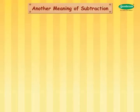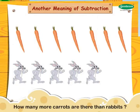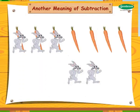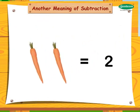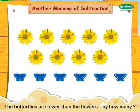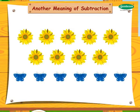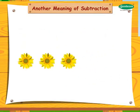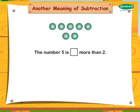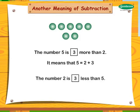Another meaning of subtraction: how many more carrots are there than rabbits? Are the butterflies fewer than the flowers? By how many? Three. The number five is three more than two — it means that five equals two plus three. The number two is three less than five — it means that two equals five minus three. This shows the relationship between addition and subtraction.